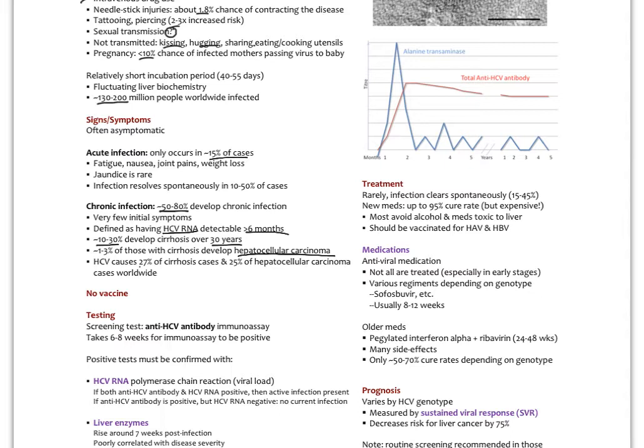HCV causes 27% of cirrhosis cases and 25% of all hepatocellular carcinoma cases worldwide. So huge player there. I mentioned that infectious hepatitis, especially C, is a major cause of cirrhosis.